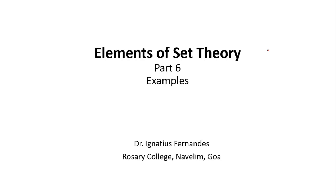Welcome back to module 6 of the second chapter of Elements of Set Theory. We will be talking about some specific examples in this module. In the last two modules, module 4 and module 5, we talked about the various identities involving union, intersection, complement, and the difference of sets, and we saw how to prove those identities using Venn diagrams and basic definitions.